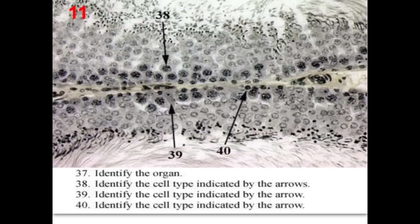Identify the organ — testis. Identify the cell type (38) — primary spermatocyte, because these are large cells with large nuclei showing coiling of chromosomes; number of chromosomes is diploid. Identify the cell type (39) — Sertoli cell, because the nucleus is triangular, pale, with prominent nucleolus and no boundaries. Identify the cell type (40) — spermatogonium: small rounded cell with a dark rounded or ovoid nucleus resting on the basement membrane.